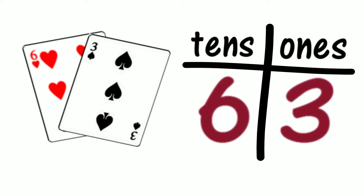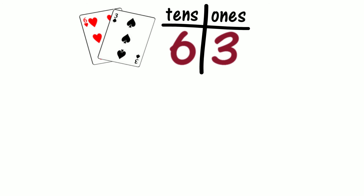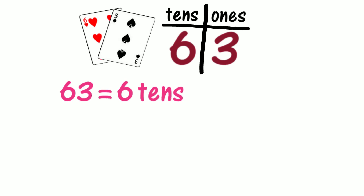How could we describe 63 using standard place value by naming the values of each digit? Could we describe 63 using standard place value as six tens and three ones?